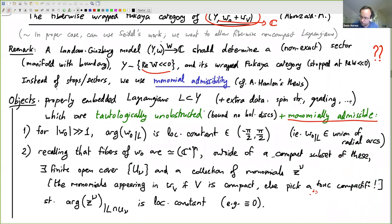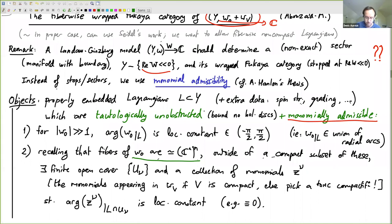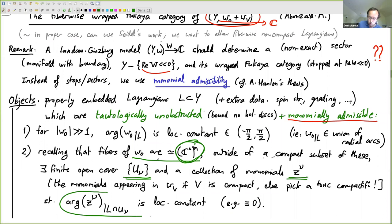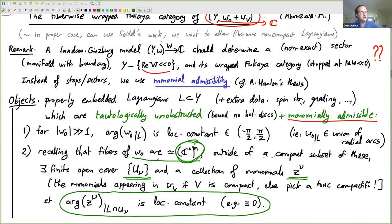To do the same thing in the fiber, the trick of monomial admissibility is to remember that each fiber of W0 is in fact a C-star to the n. Outside a compact subset of C-star to the n, I decompose it into a union of regions. For each region there will be some monomial in the coordinates, and I require that this monomial is locally constant.